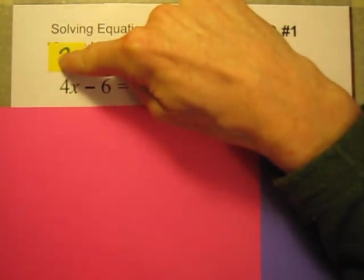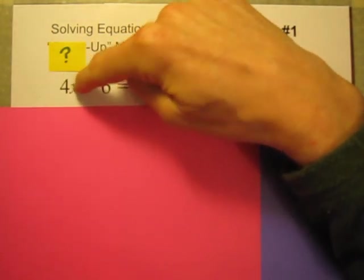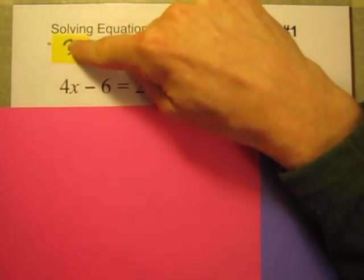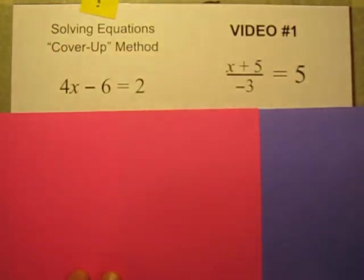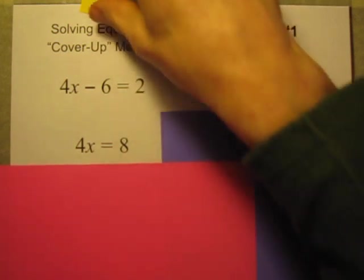And what I'm covering up is 4x. So I know 4x must be equal to 8. 4 times x equals 8. So if you want, you can just keep that in your mind, or you can rewrite it. 4x equals 8.